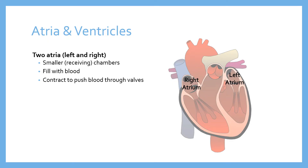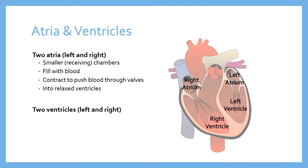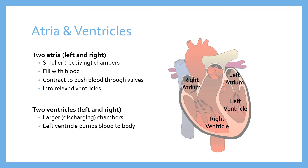The larger chambers beneath the atria are called ventricles. When the atria contract, the ventricles are relaxed and blood flows into them. There are two ventricles: the left ventricle and the right ventricle, underneath their respective atria. These are sometimes referred to as discharging chambers, because when they contract, blood is ejected out of the heart — via the ventricles the blood leaves, whether heading to the lungs or to the body.